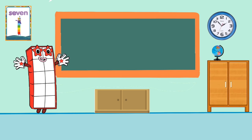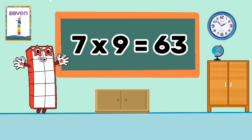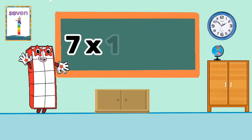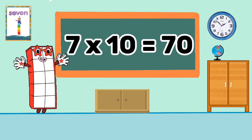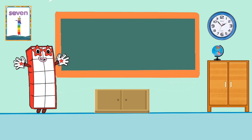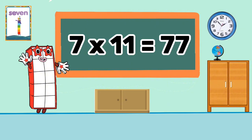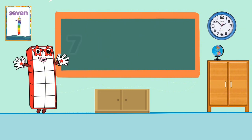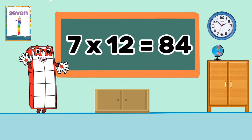7 times 9 equals 63. 7 times 10 equals 70. 7 times 11 equals 77. 7 times 12 equals 84.